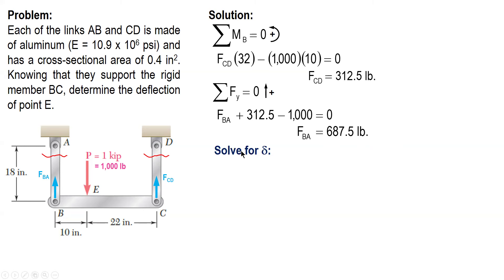So let's solve for the elongation of link AB and also link CD. So this is link AB or BA and displacement of BA or elongation rather. And then this one is the elongation of link CD. So the final position of member BC is this one.